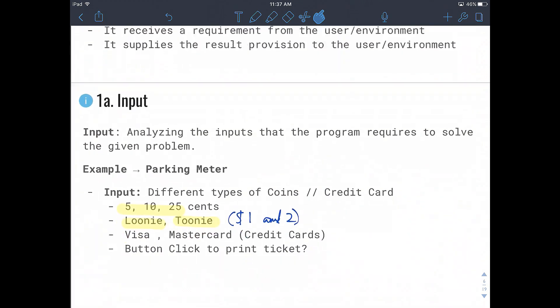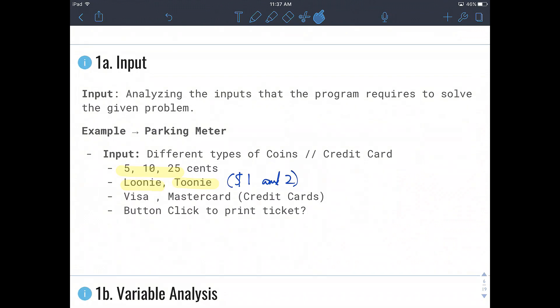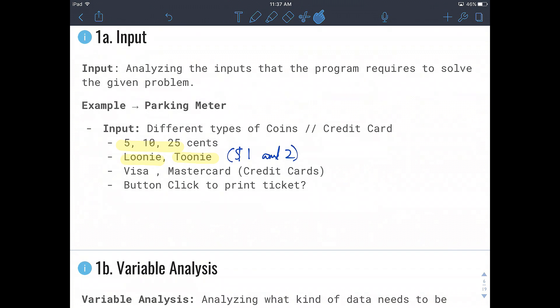Let's look at input. Input is a way of analyzing the inputs that the program requires to solve the given problem. So going back to our example problem of the parking meter, we can have different inputs such as coins or credit card. If we have coins, we can allow the inputs of 5, 10 or 25 cents or a nickel, dime or quarter.